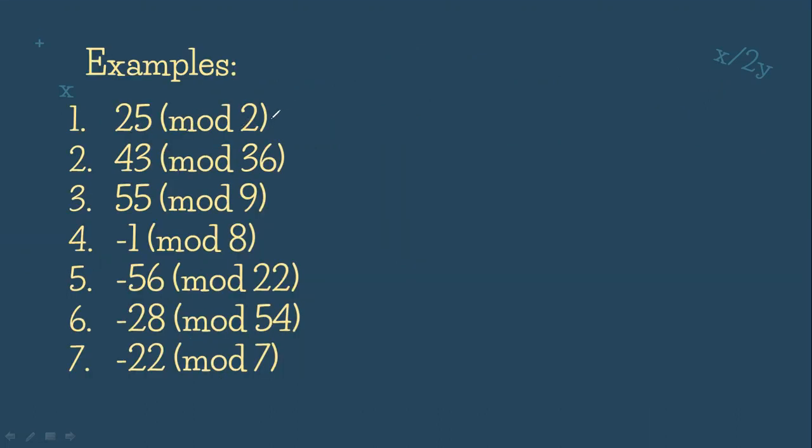First, 25 mod 2. This is just like saying, if we divide 25 by 2, what will be the remainder? So we have here 25 divided by 2, that is 12, but it has a remainder of 1. So we have 2 times 12 plus 1 equals 25. But the modulo is asking for the remainder only. Therefore, our answer is 1.